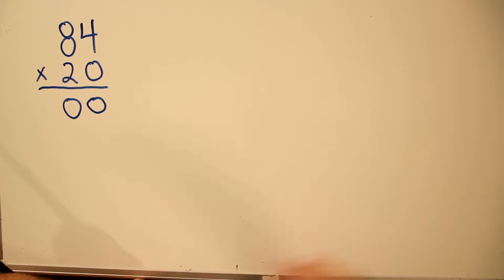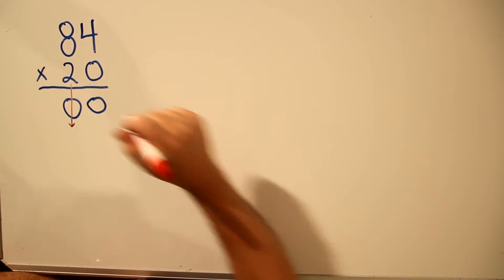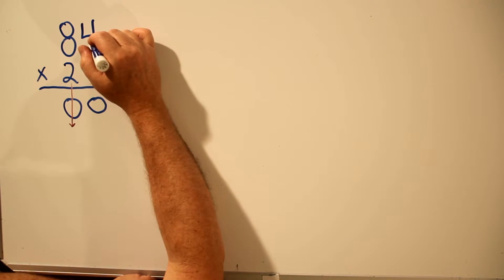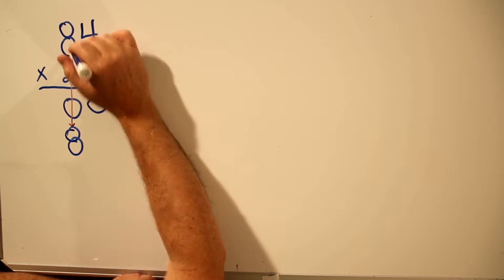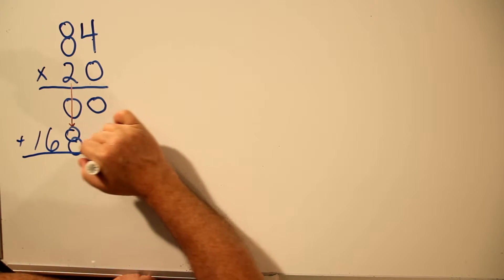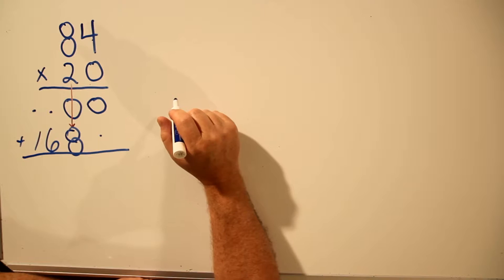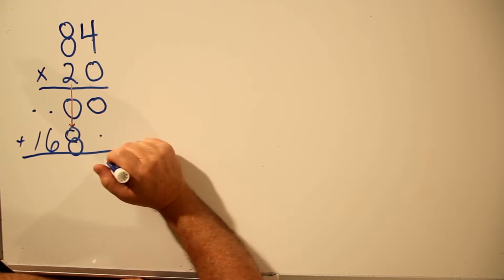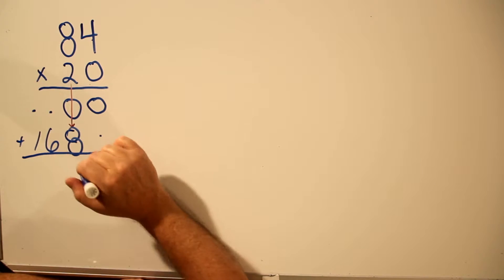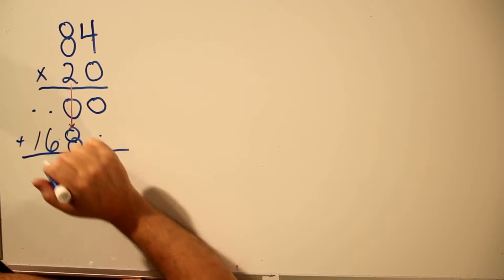And then we move to the 2. I'll write the answer underneath the 2. 2 times 4 is 8. 2 times 8 is 16. Then we add up the two rows. 0 plus 0. Anywhere where there's a blank, we assume it to be 0. 0 plus 0 is 0. 0 plus 8 is 8. 0 plus 6 is 6.